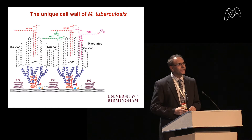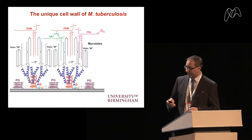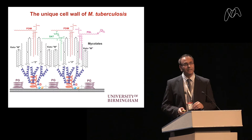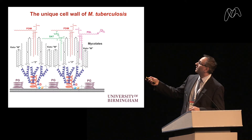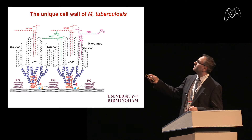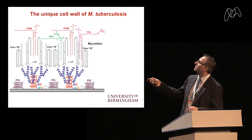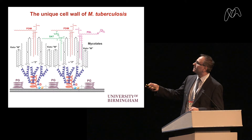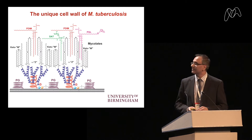Another unusual feature of the mycobacterial cell wall is the number of extracellular lipids. We have diacyldimycocerosates, diacyl trehalose, and phenolic glycolipids — where a sugar residue is attached to a structure very similar to diacyldimycocerosate. These intercalate with the mycolates to give that very waxy feature we associate with the TB cell wall.